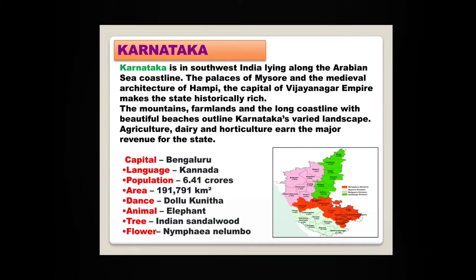Karnataka is in southwest India, lying along the Arabian Sea coastline. The palaces of Mysore and the medieval architecture of Hampi, the capital of the Vijayanagara Empire, make the state historically rich. The mountains, farmlands and the long coastline with beautiful beaches outline Karnataka's varied landscape. Agriculture, dairy and horticulture earn the major revenue for the state. The capital of Karnataka is Bengaluru.